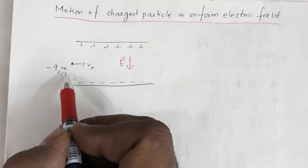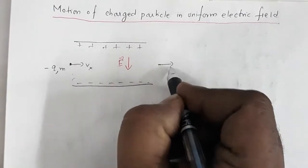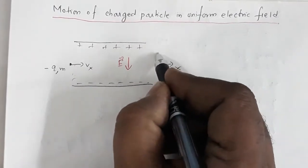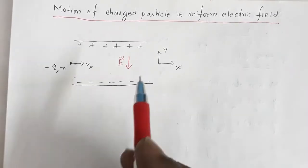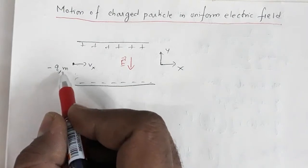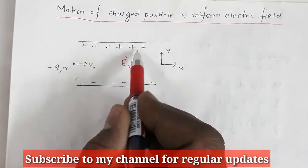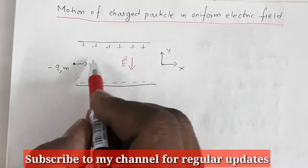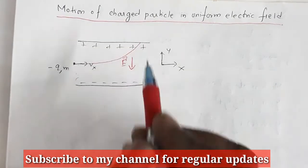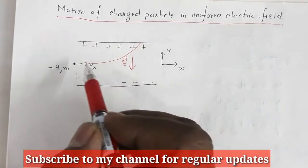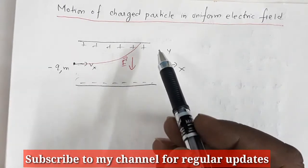Suppose you have a point charge of minus q and mass m, projected in the horizontal direction with speed vx. We define this horizontal axis as the x-axis and the vertical axis as the y-axis. This charge particle is projected along the x-axis with initial velocity vx. Being a negative charge, it will be deflected opposite to the direction of the electric field — upward — and this is the trajectory of the charge particle.